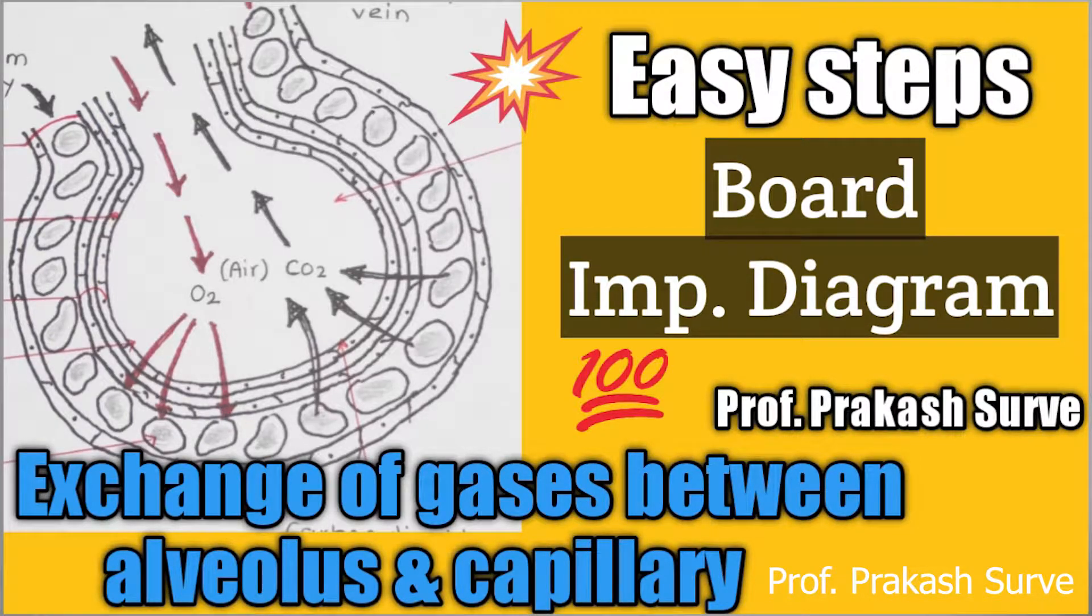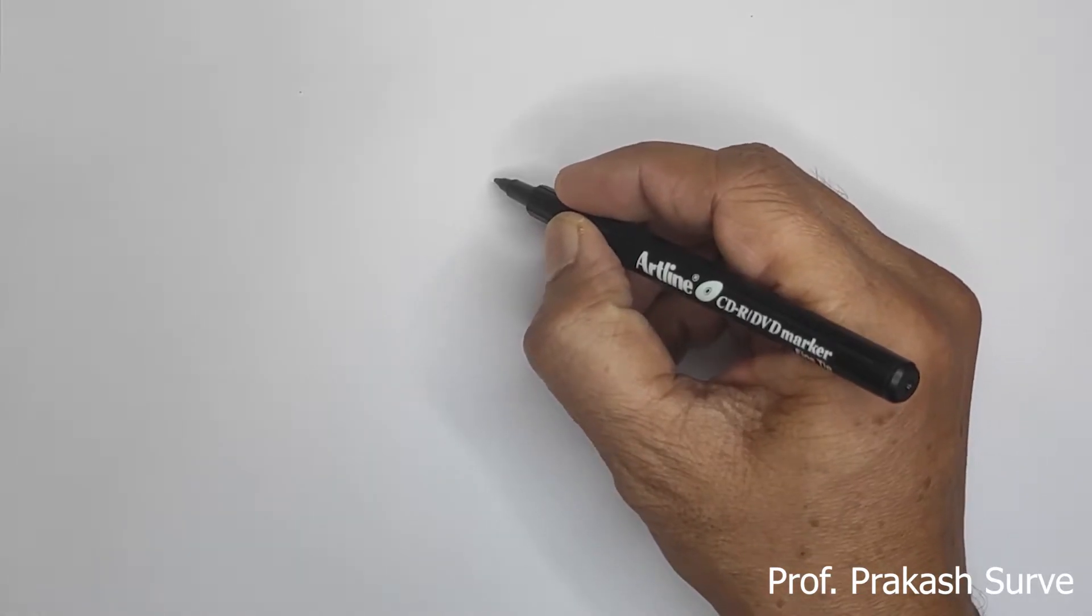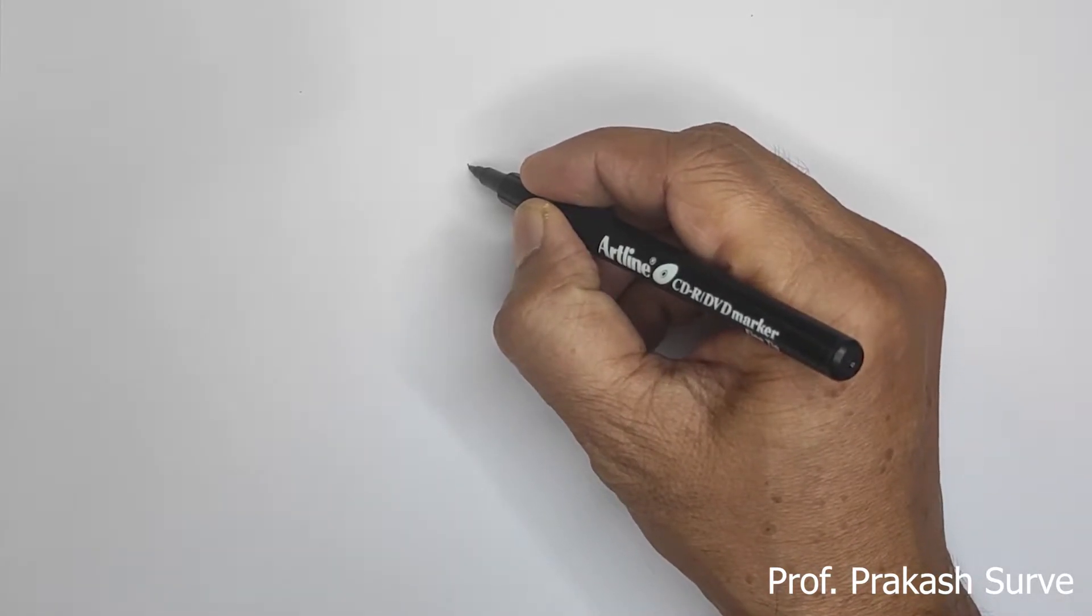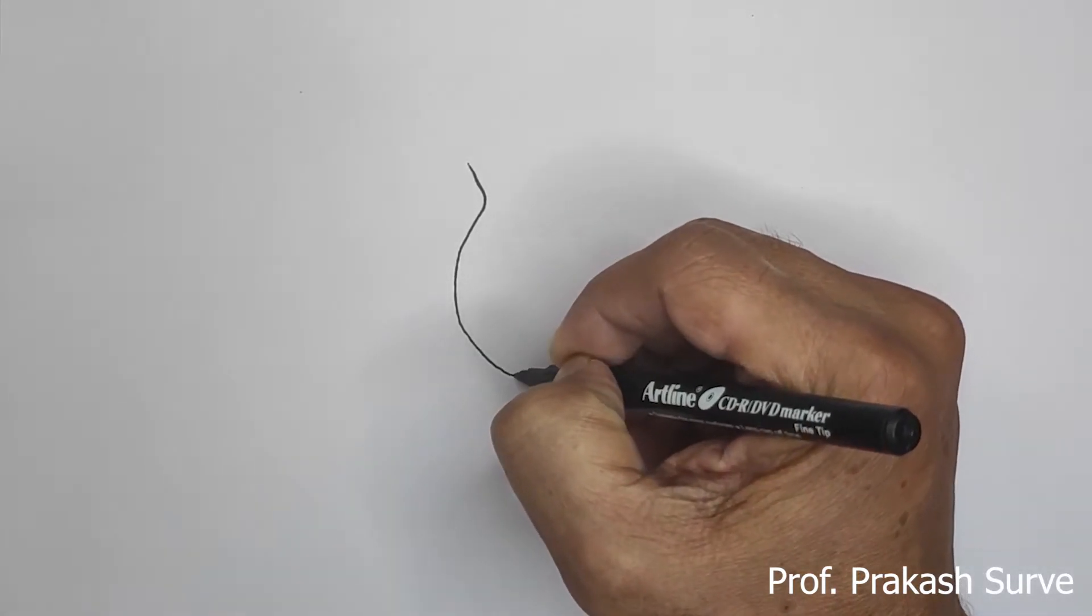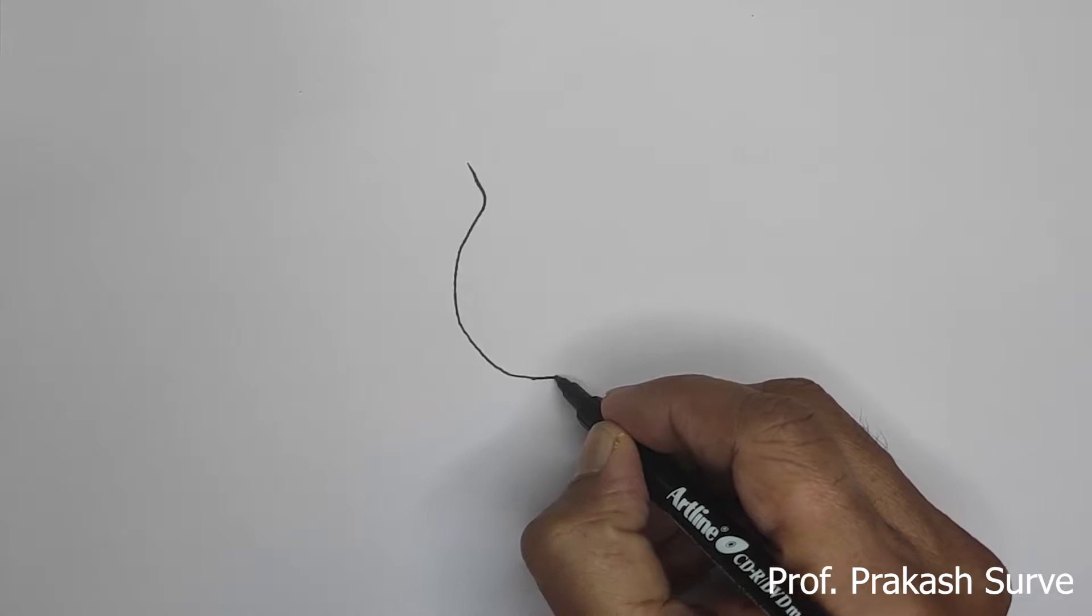Welcome dear students to my channel. Today we'll see the diagram for exchange of gases between alveolus and the capillary. For that, simply first we'll draw the shapes somewhat like a balloon.